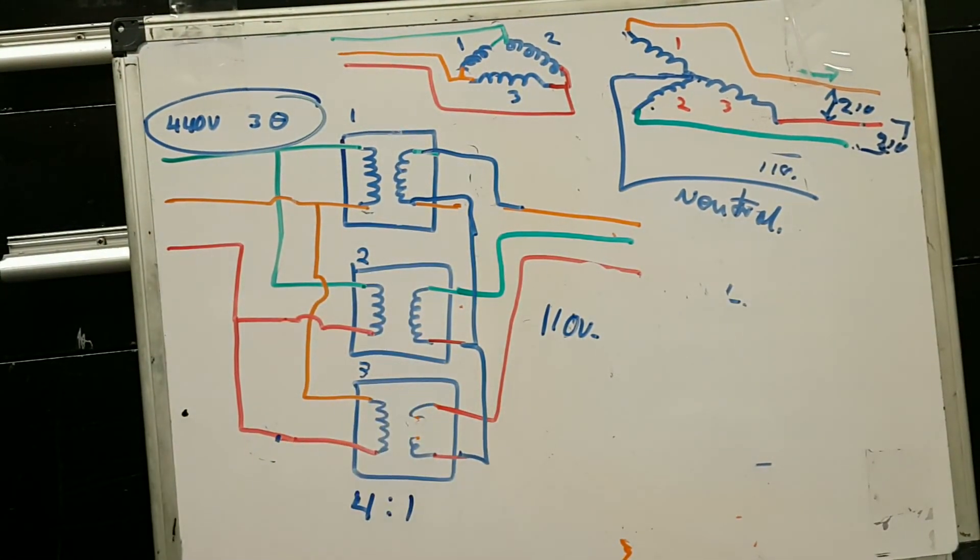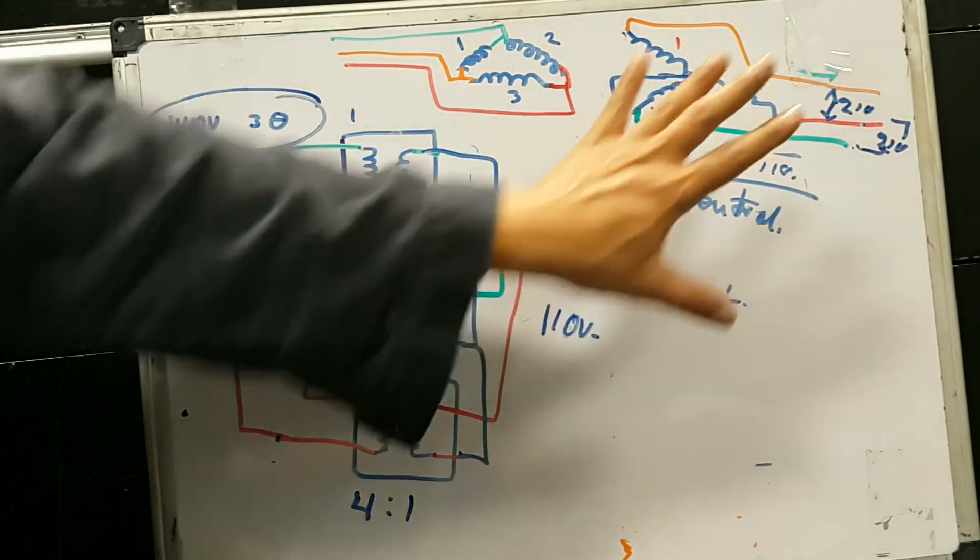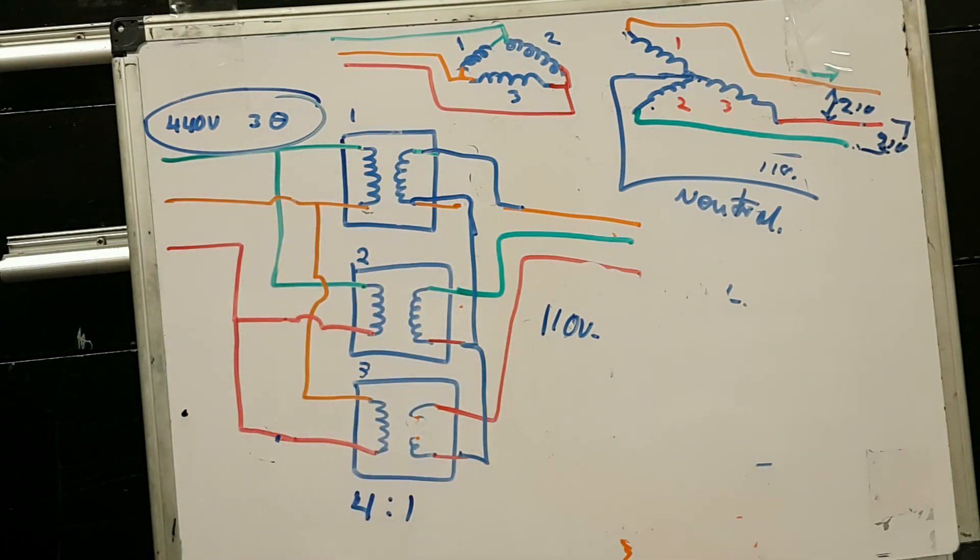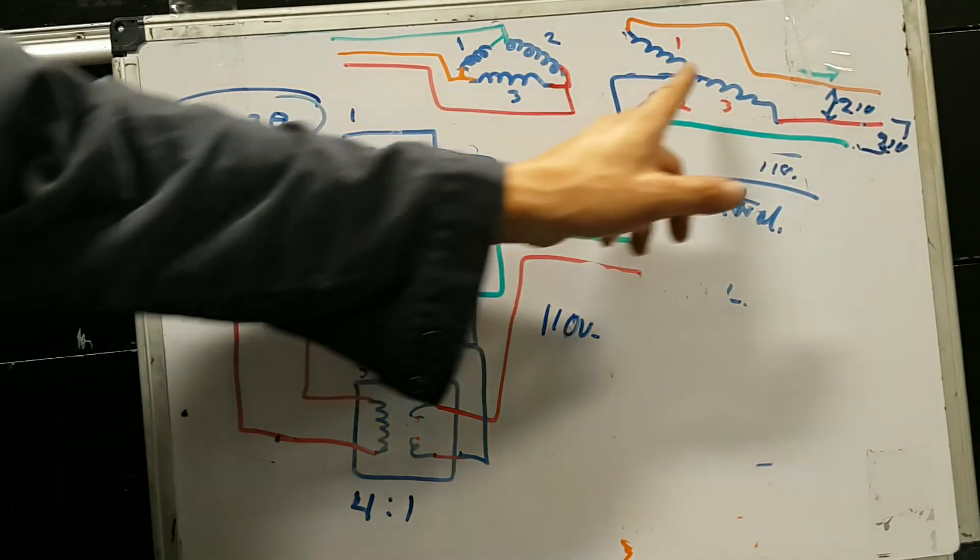Now if one of these transformers goes out, definitely we're not going to have 73% of the power out there. That was an advantage only for the delta-delta, but this is delta-Y.